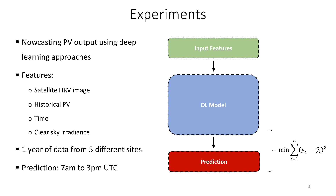So, we want to nowcast PV output using deep learning approaches. We have some input data, or features, that we feed into a deep learning model, and we then train this model to output some prediction. The features we are currently using are satellite images from the HRV channel, historical PV data, time, and clear sky radiance. We are training our model using one year of data from five different sites, and keeping 20% of the data for testing. We are mainly interested in predictions between 7 am and 3 pm.